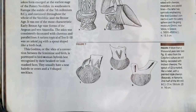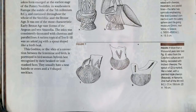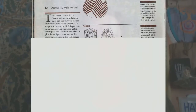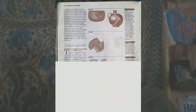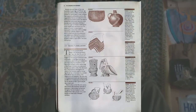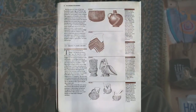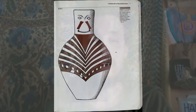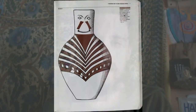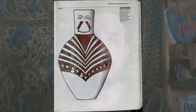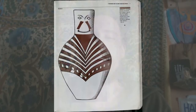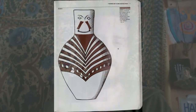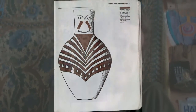The goddess's connection with birds is portrayed in bird-woman hybrids, best recognized by their beaked or beak-masked faces. They usually have a neat hairdo or are crowned with a V-shaped necklace. Figure 8, an early Vinca vase painted red on cream background, 5,200–5,000 BC from Yugoslavia, clearly shows this — the lip has eyes and a mouth, and the pattern is iconic of a face, with a bill suggesting a bird and chevrons emphasizing the pubic triangle.